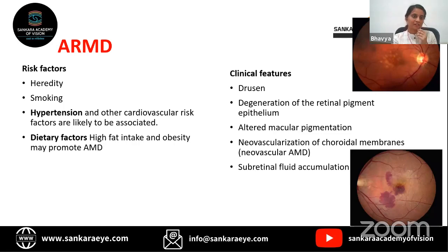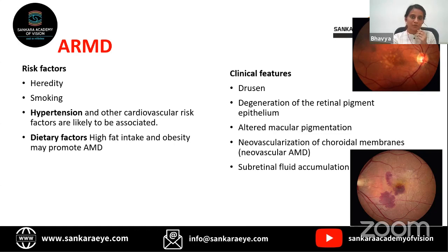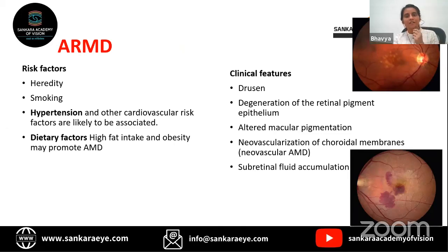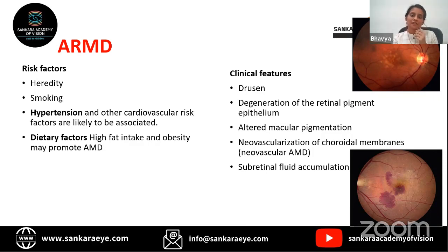Risk factors for AMD include hereditary factors — if a first-degree relative is affected, there is a high chance of familial occurrence. Smoking, hypertension, and other cardiovascular risk factors are also associated, as are dietary factors like high fat intake and obesity. Clinical features include drusen ranging from small to large size, degeneration of retinal pigment epithelium, altered macular pigmentation, choroidal neovascularization, and subretinal fluid accumulation.